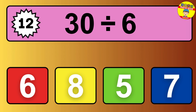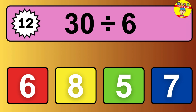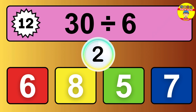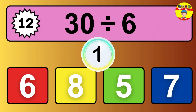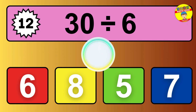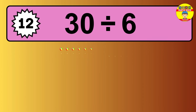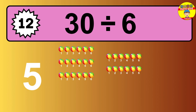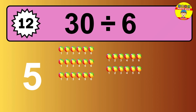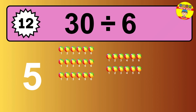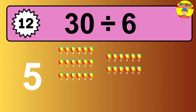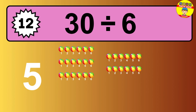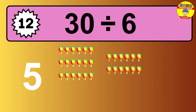30 divided by 6 — time to think. Let's go to the solution. Divide the number 30 by 6. Each group contains 6 units, so dividing 30 by 6 results in 5 equal groups. Thus, the result is 30 divided by 6 equals 5.